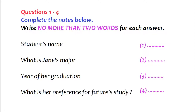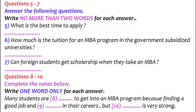Before you hear the rest of the conversation, you have some time to look at questions five to ten. I think I need to do well on the GMAT and I'll definitely need the TOEFL or IELTS. Right, that's right. You'll need at least 600 on the TOEFL or 6.5 on IELTS. In addition, you need to have completed a bachelor's degree too. Did you take the GMAT yet? No, but I plan to take it in August.